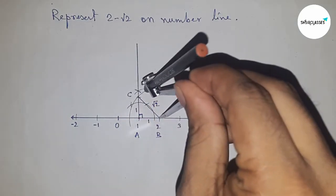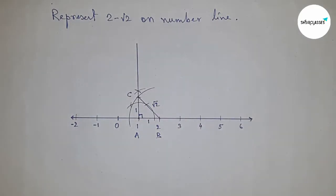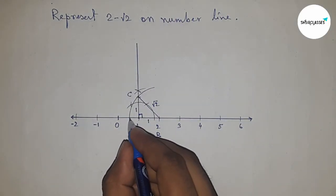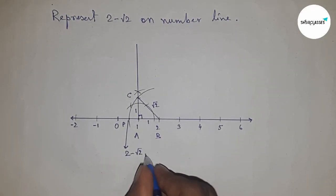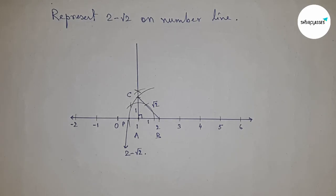Drawing an arc which cuts the number line at point P. This is the representation of 2 minus root 2. That's all, thanks for watching. Please like and comment on my video.